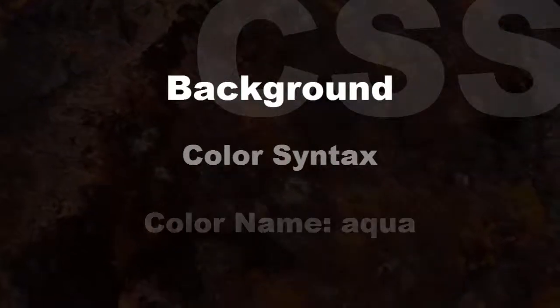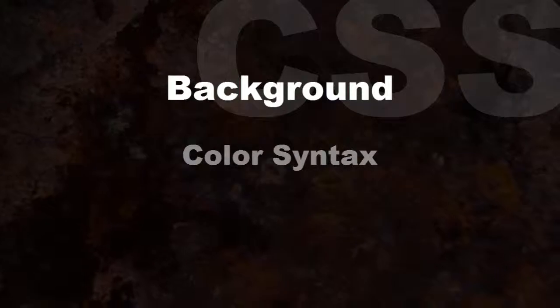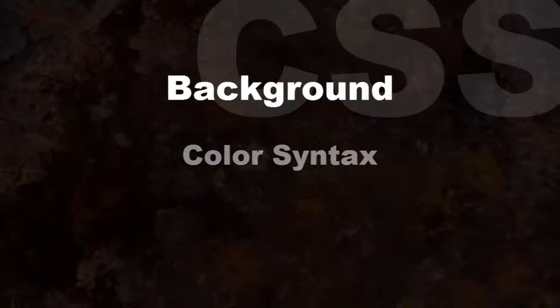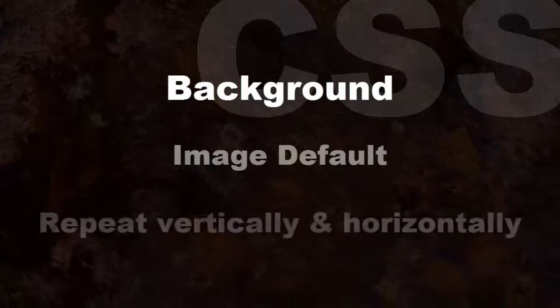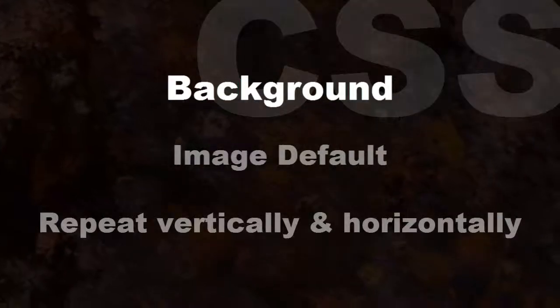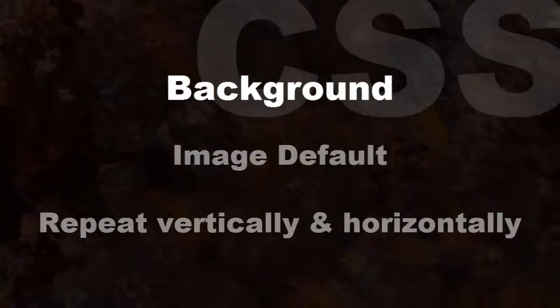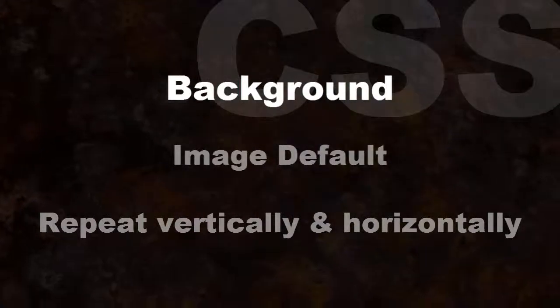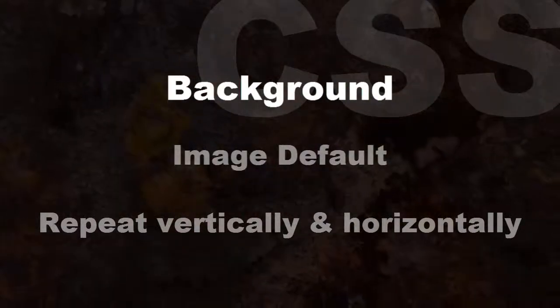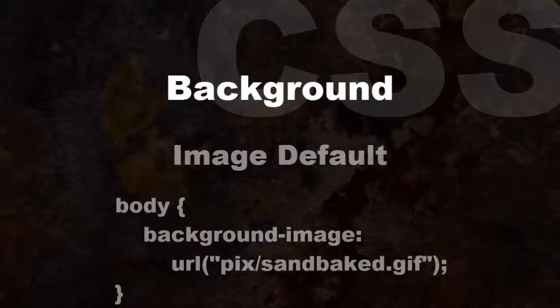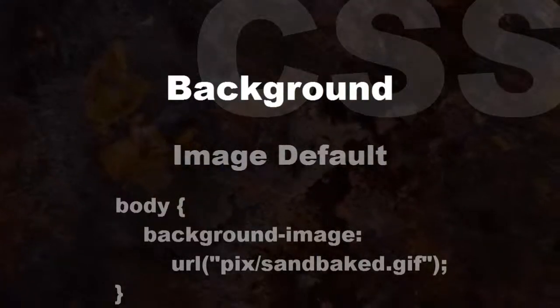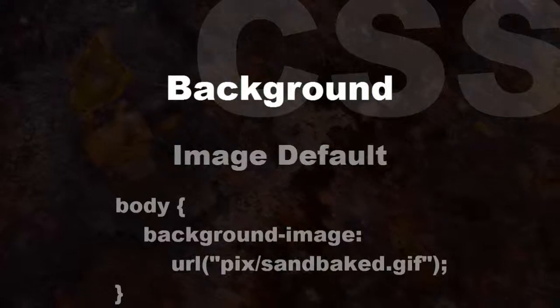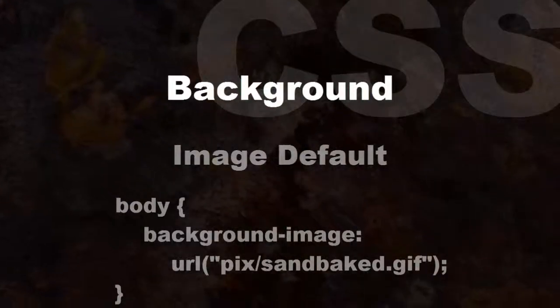We will learn more about colors and the new CSS3 color specifications in a later lesson. The default behavior of a background image is to repeat the image both vertically and horizontally to fill the entire background of the element. For example: body { background-image: url("pix/sandbaked.gif"); }.